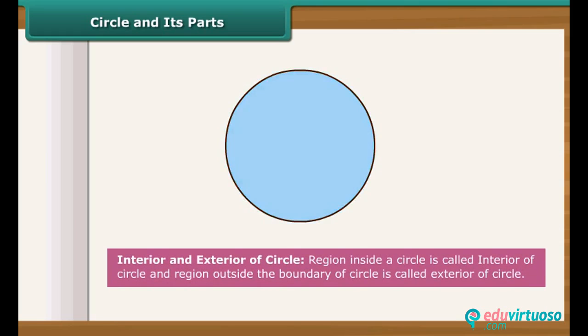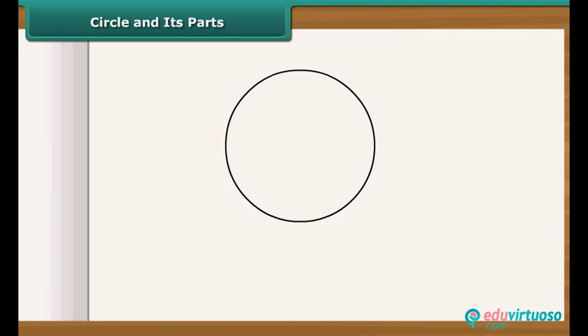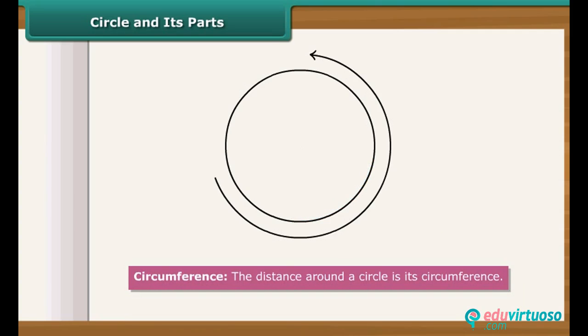Like any other closed figure, a circle has interior and exterior region. The region inside a circle can be bounded by two radii and arc of circle. The region is called sector of the circle. Similarly, there is a portion bounded by chord and arc of circle which is called segment of the circle. The boundary of a circle is known as circumference of the circle. The distance around a circle is its circumference.